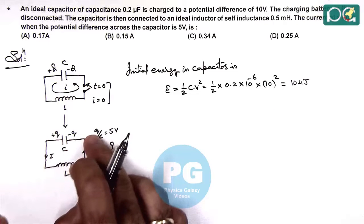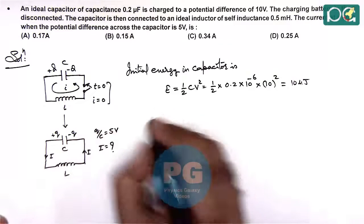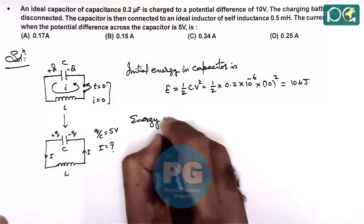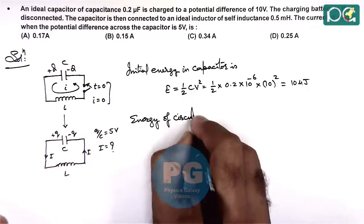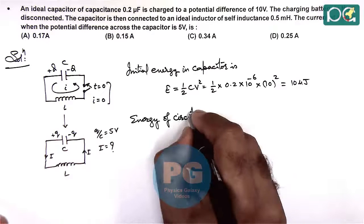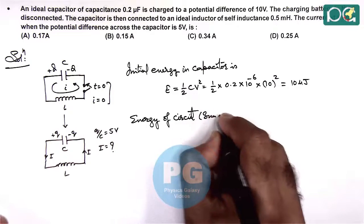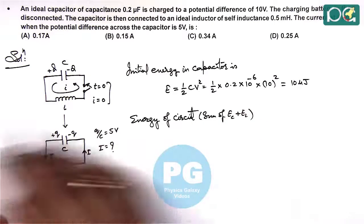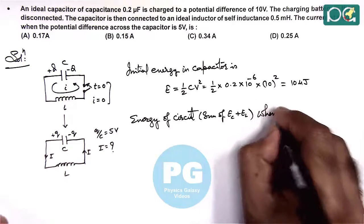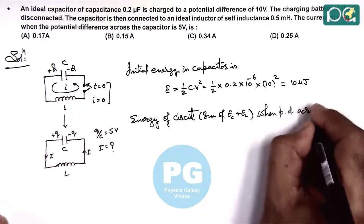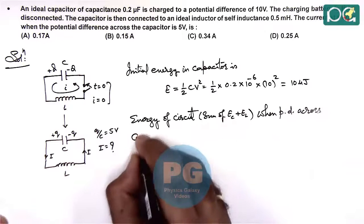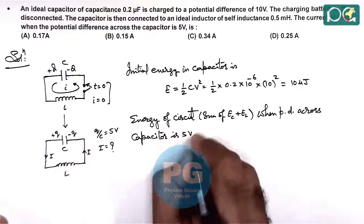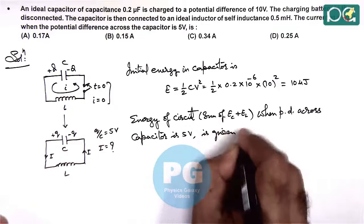When the charge is such that capacitor voltage is 5V, we can write the energy of the circuit. The circuit energy when the potential difference across the capacitor is 5V is given as follows.